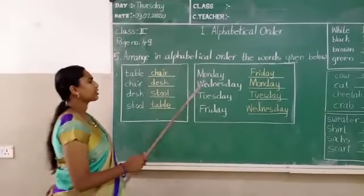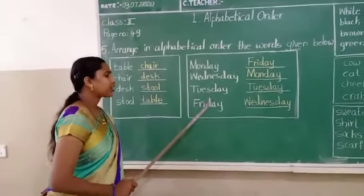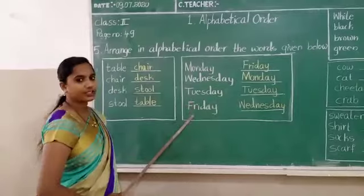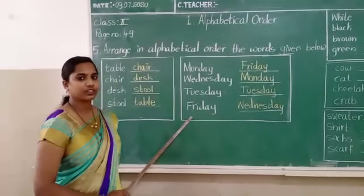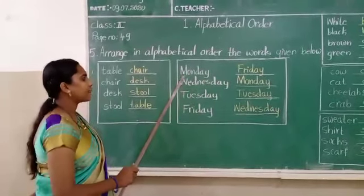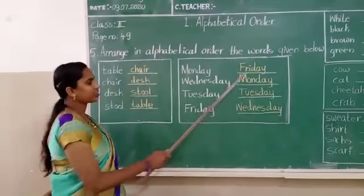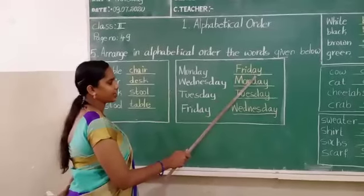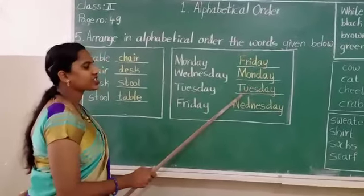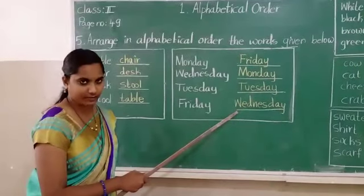Next one: Monday, Wednesday, Tuesday, Friday. What is this? It's days in a week, right? Now first letter you should see — M, W, T and F. So first one is Friday. Next one, Monday. Next, Tuesday. Then, Wednesday. Okay?